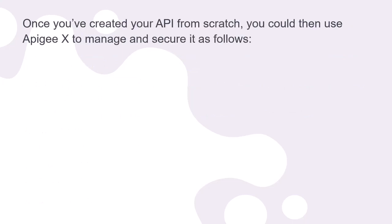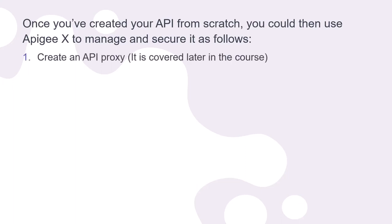Once you have created your API from scratch, you can then use Apigee to manage and secure it. First, create an API proxy — this will be covered in detail later in this course. Next, configure policies for security, traffic management, and other requirements. Policies are pre-built pieces of functionality available to developers without writing custom code, covering authentication, authorization, traffic management, and security — you simply plug them into your API proxies within the Apigee API management platform.